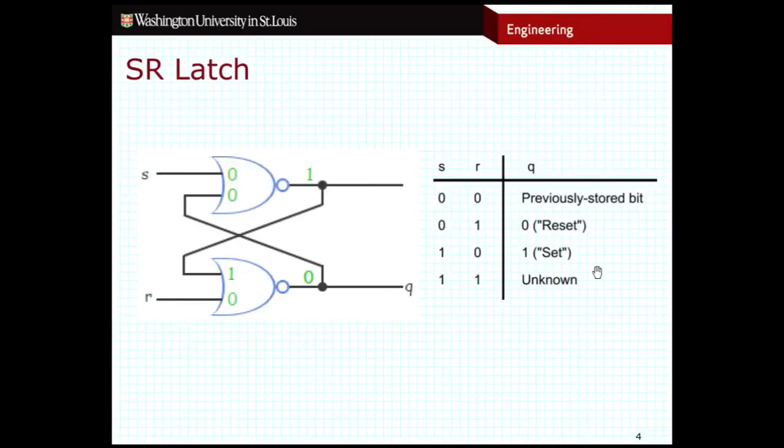So if I take a look at a truth table for this, you can see S is 0, R is 1, that's the reset. S is 1, R is 0, that's the set. And then finally, if I see that they are both low, it's going to be whatever it was previously.